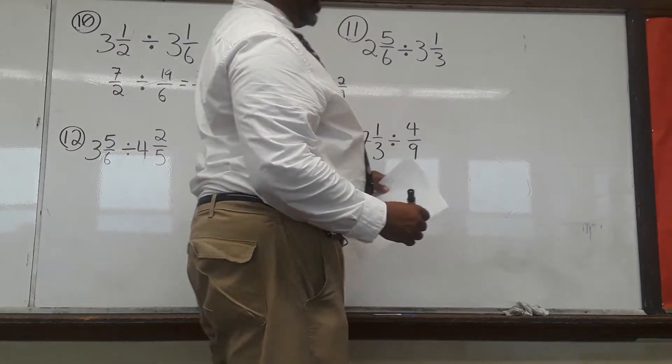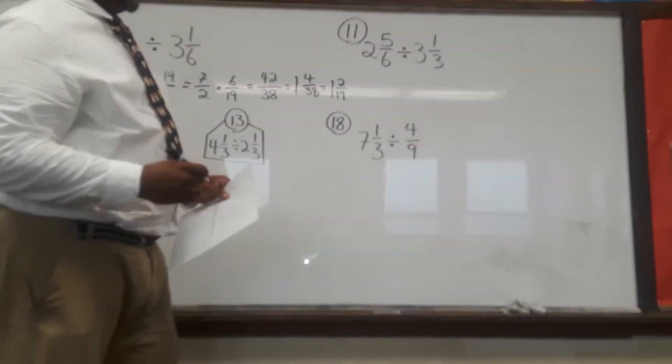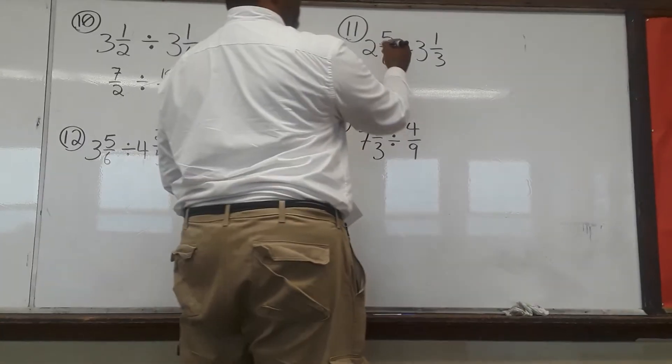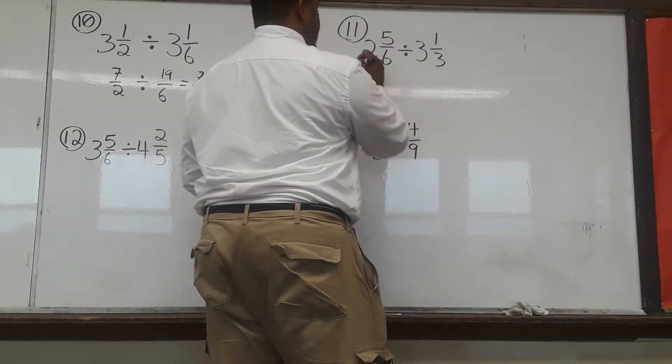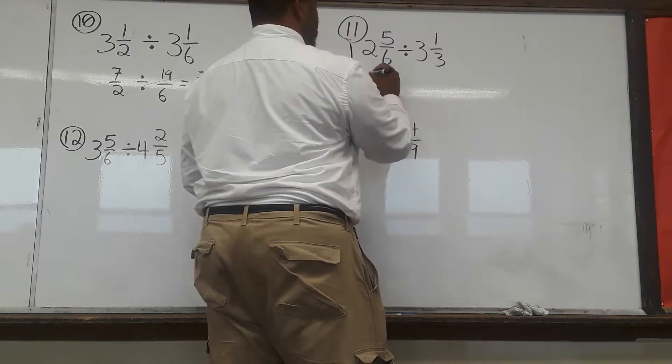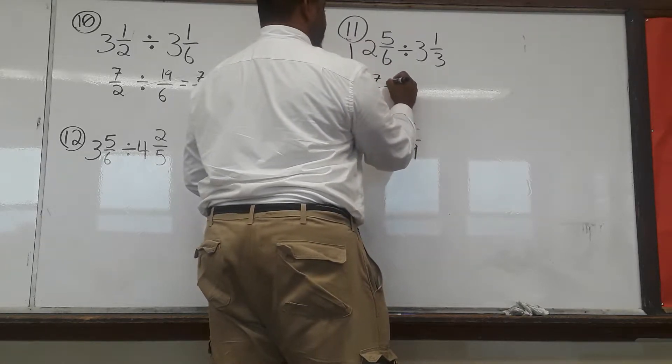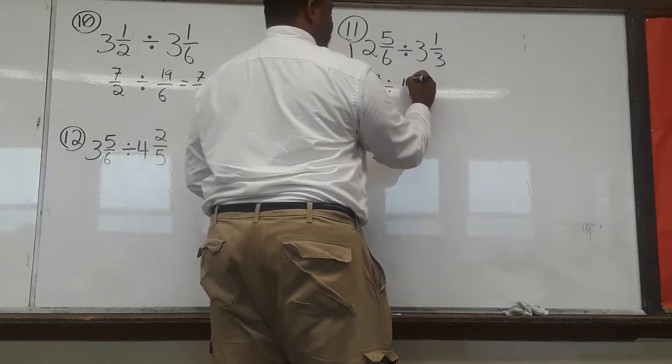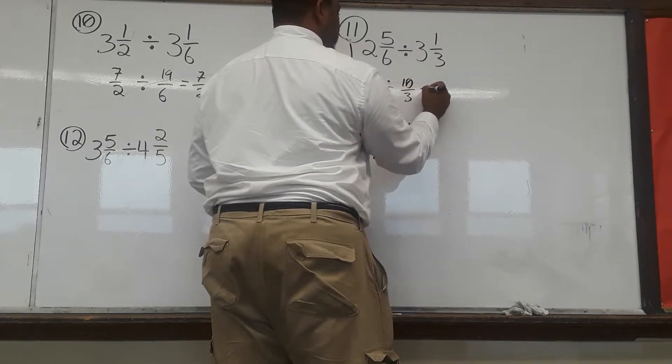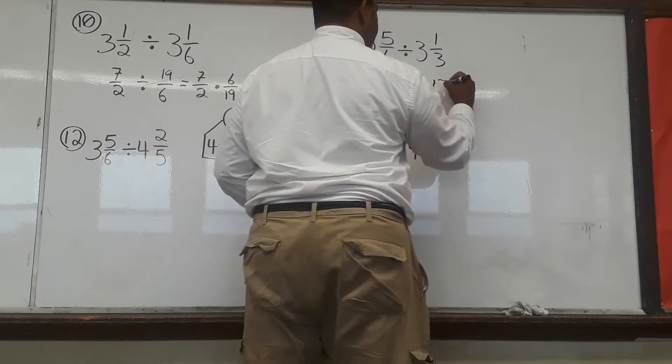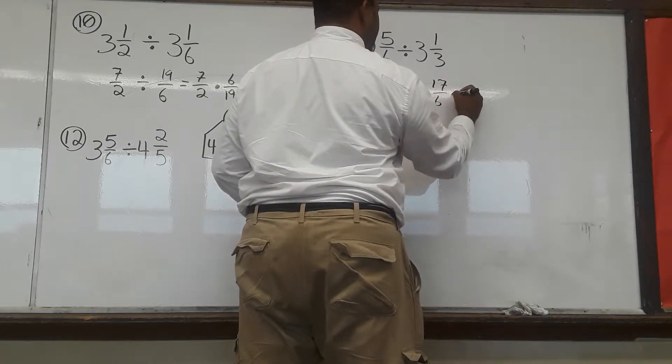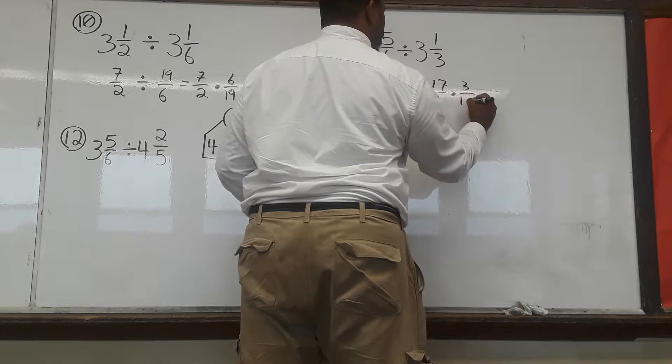For number 11, again, we're converting from mixed numbers to improper fractions. 6 times 2 gives us 12, plus 5 gives us 17 over 6, and that's going to be divided by 3 times 3 is 9, plus 1 gives us 10 over 3, which equals 17 over 6 times 3 over 10.